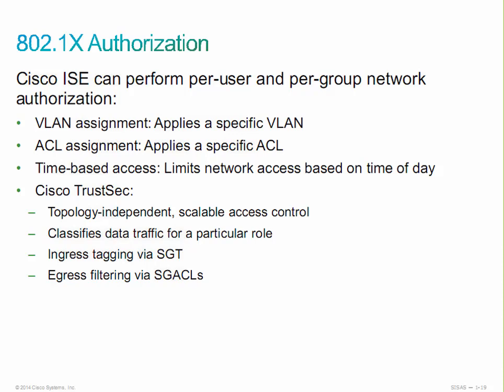In 802.1X, we'll have some authentication and authorization components for clients. Are we going to assign the client to a particular VLAN using dynamic VLAN assignment? We can provide different access rules — ingress and egress — for the VLAN, and provide access control and auditing based on that VLAN assignment. We can also do ACL assignment, where the authentication server associates an access control list with an individual user or group of users and instructs the authenticator to dynamically assign this ACL to that particular session.